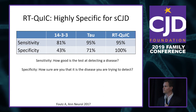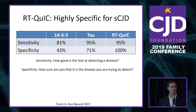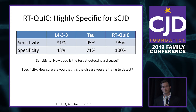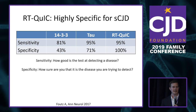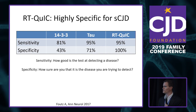Comparing RT-QuIC to 14-3-3: 14-3-3 captures 81% of cases but is only specific for prion disease 43% of the time — meaning only 43% of positive 14-3-3 results are actually prion disease. RT-QuIC captures 95% of cases, and as close to 100% specific as you can get. Sensitivity is how well a test detects what you're looking for; specificity is how sure you are that the result represents the disease you want.